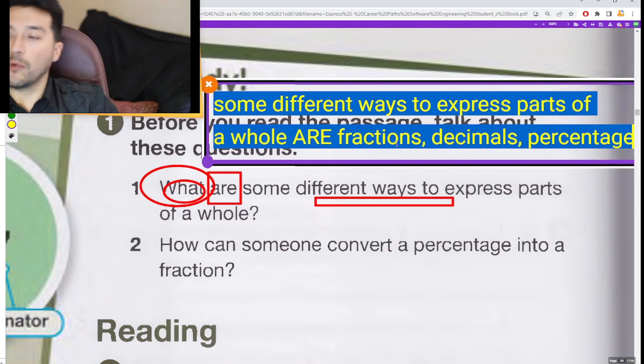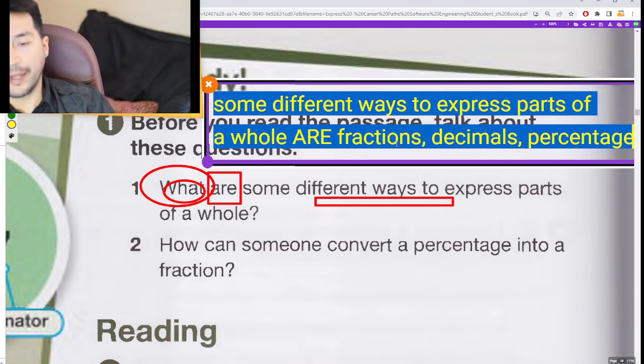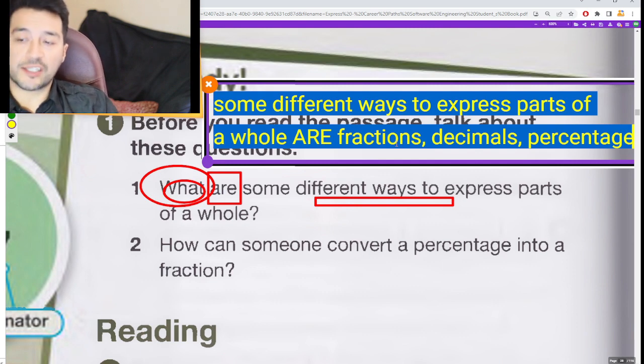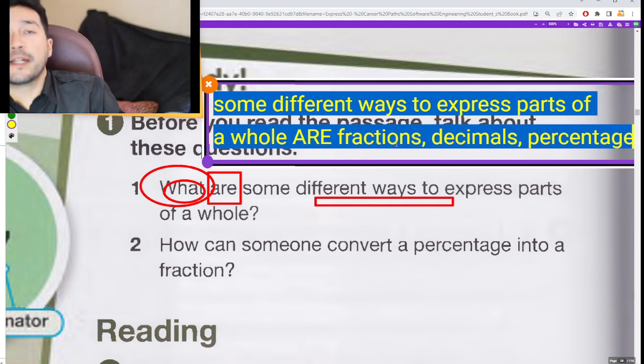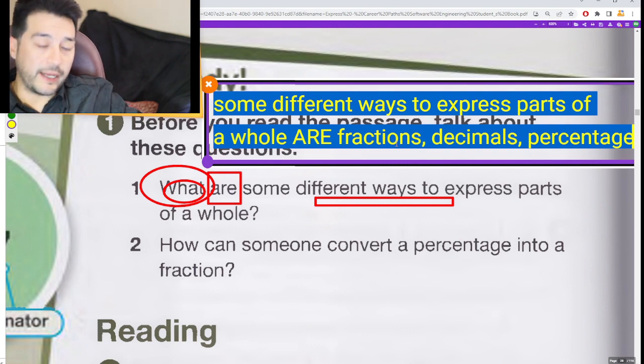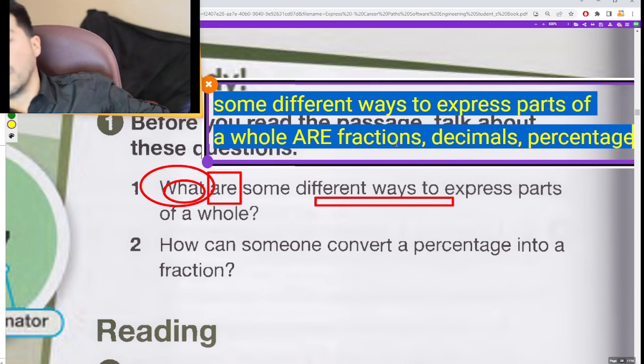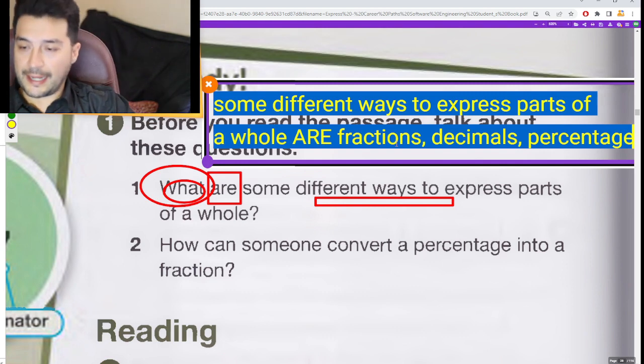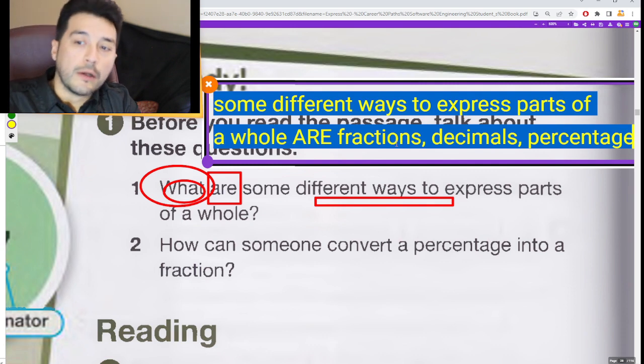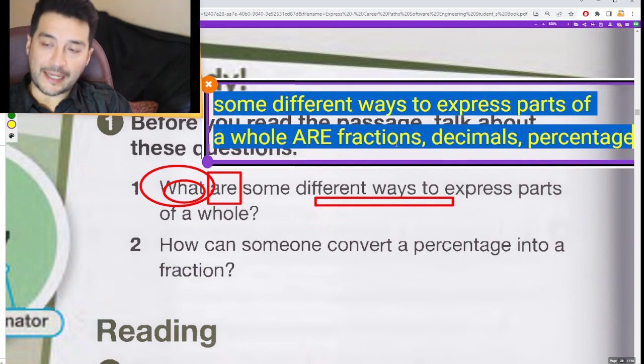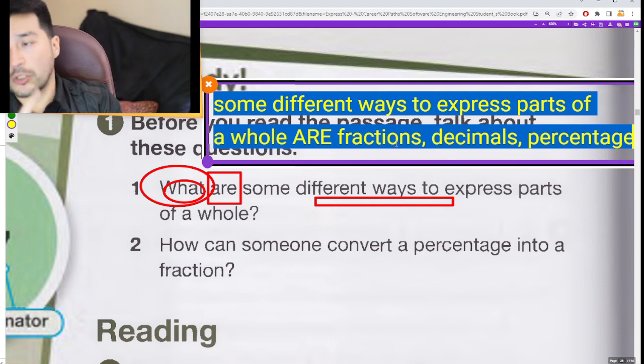Entonces, tienes que poner mucha atención en la lectura y así serás capaz de responder estas preguntas. Number one: What are some different ways to express parts of a whole? Hey, student, what are some different ways to express parts of a whole? ¿Qué son diferentes maneras para comunicar o expresar las partes de un entero? Algunas maneras diferentes para expresar las partes de un entero son: Fractions, Decimals, Percentages.